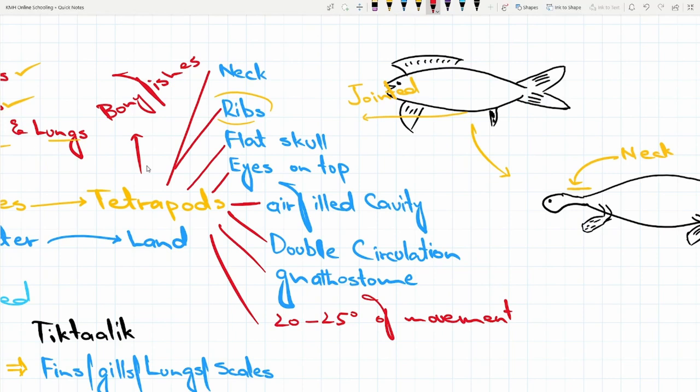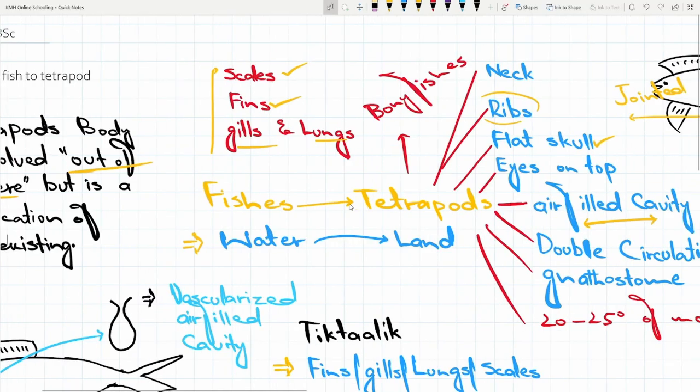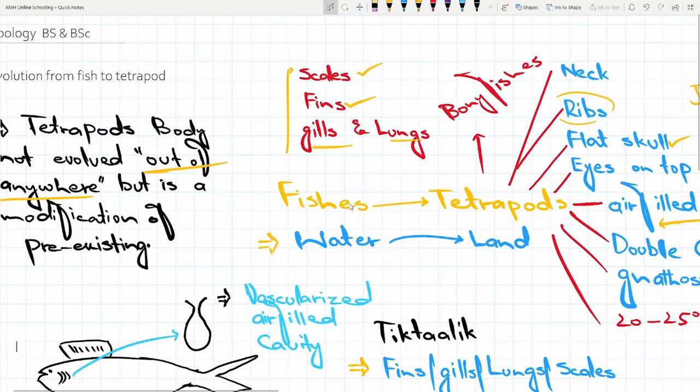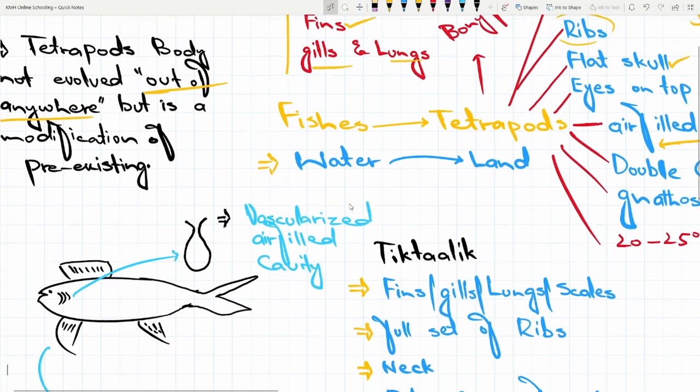एक और जो distinguished point था वो था flat skull पाया जाता था, eyes were on the top of the skull and after that air filled cavities थी. अब ये air filled cavities से मुराद आपके पास species थी उन में ये air filled cavities पहले से ही पाई थी but not क्योंके वहां पर gills भी थे और lungs भी थे पर यहां पर एक और चीज़ थी.